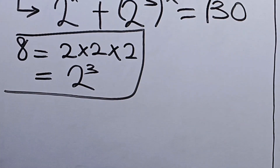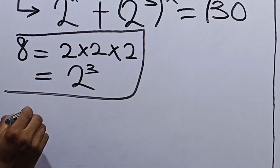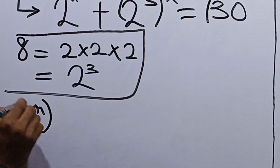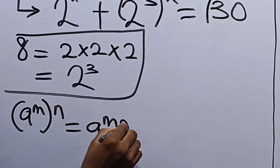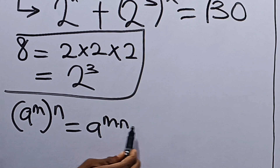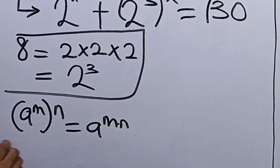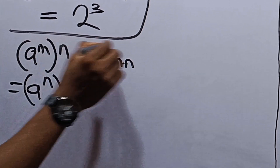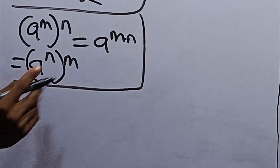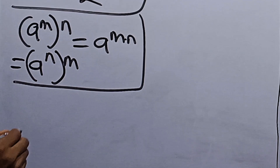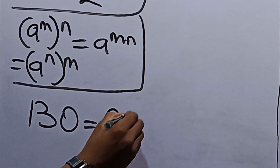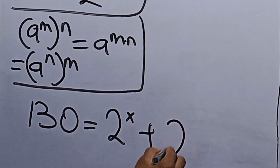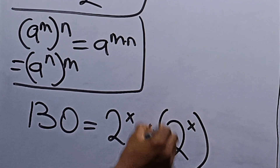Moving on, we use the rule that when you have a raised to the power n, raised to the power m, it equals a raised to the power mn. Since multiplication is commutative, this also equals a raised to the power n raised to the power m. Using this, 130 becomes equal to 2 raised to the power x plus 2 raised to the power x, raised to the power of 3.